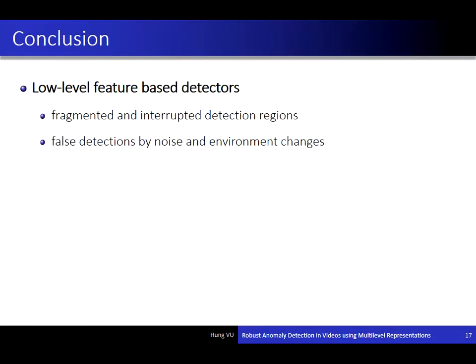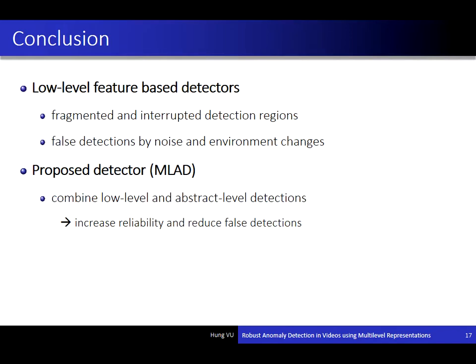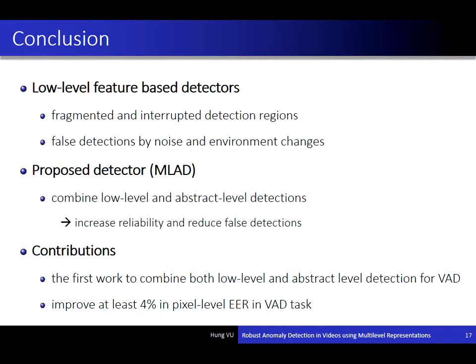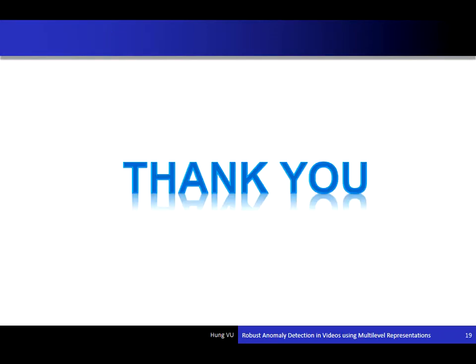In this work, we identified issues of low-level feature-based detectors: fragmented and interrupted detection regions, and many false detections due to noise and environment changes. We propose a combination of low-level and abstract-level detectors to achieve a better detector with more reliability and fewer false detections. The contribution of this work is that we are the first to combine both low-level and abstract-level features for video anomaly detection, obtaining at least 4% improvement in pixel-level equal error rates.